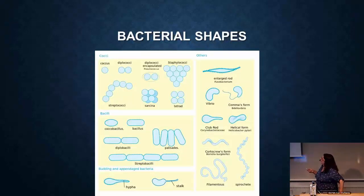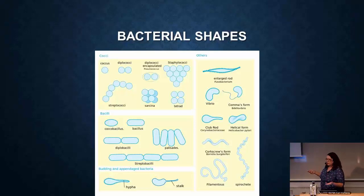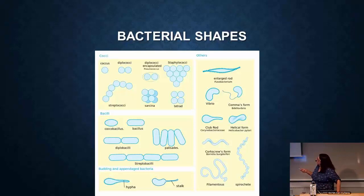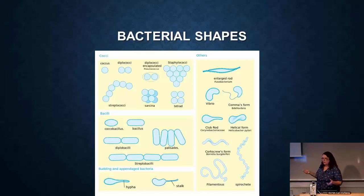Bacteria come in lots of different shapes. Bacteria that are round are known as cocci. They can be alone, or you can have two stuck together called diplococci, or a chain called streptococci. Probably the most common are bacilli, which are rod-shaped — longer than they are wide — and can also appear in pairs as diplobacilli or in long chains as streptobacilli. These two classes, cocci and bacilli, are the most common.